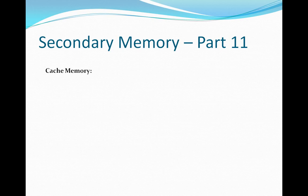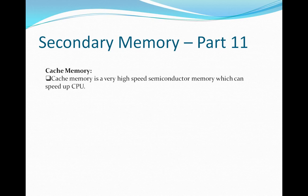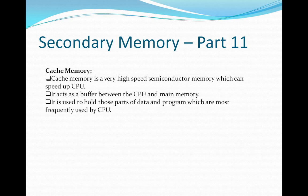Since we are on the topic of memory, let's also talk about cache memory. Cache memory is a very high-speed semiconductor memory that can speed up the CPU. It acts as a buffer between the CPU and the main memory. It holds the parts of data and programs most frequently used by the CPU, storing them for temporary use.